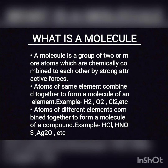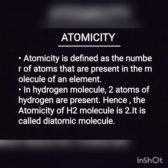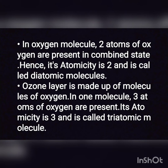Now we will know about atomicity. Atomicity is defined as the number of atoms present in the molecule of an element. In a hydrogen molecule (H2), two atoms of hydrogen are present; hence the atomicity of H2 is 2, and it is called a diatomic molecule. Similarly, in one oxygen molecule (O2), two atoms of oxygen are present; hence the atomicity of O2 is 2, and oxygen molecule is also known as a diatomic molecule.